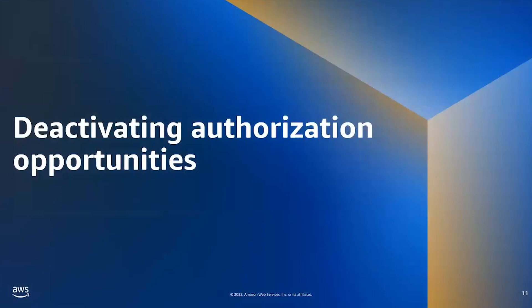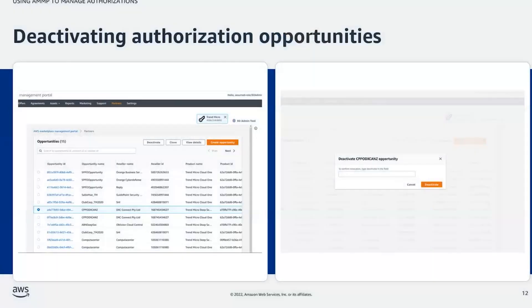Now we'll go over how to deactivate authorization opportunities. If a seller mistakenly creates an authorization opportunity, or if they simply want to deactivate an existing opportunity they've previously created, they can deactivate the opportunity. They can navigate to the Partners tab in the AWS Marketplace Management Portal, select the authorization opportunity, and choose Deactivate. Additionally, they can click on the authorization opportunity to view the details and choose Deactivate. They will be prompted to confirm the deactivation, after which the authorization opportunity will be cancelled.